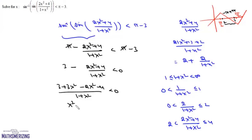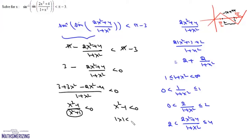We get (x² − 1)/(x² + 1) < 0. Since x² + 1 is always positive, we can cancel it, giving x² − 1 < 0, that is |x| < 1, which means x lies between −1 and +1. That is the answer to this question.